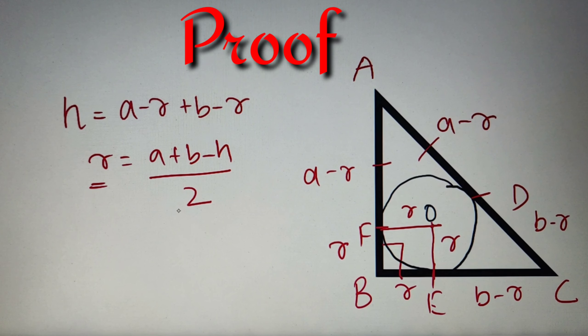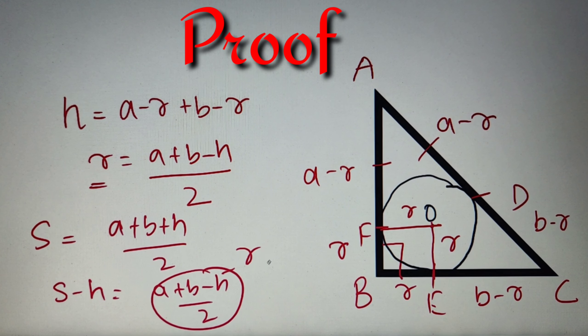So we have found out that the inradius of the triangle is equal to a plus b minus h by 2. Now let's find out what is the semiperimeter for the case of this right angle triangle. So s is equal to a plus b plus c by 2. Now in this case c is equal to h so our semiperimeter is equal to a plus b plus h by 2. Now if I subtract h from both the sides I will get s minus h is equal to a plus b minus h by 2. Now we have just found out that a plus b minus h by 2 is equal to r. So we can say that s minus h is indeed equal to r and we have proved that the inradius of a right angle triangle is equal to semiperimeter minus hypotenuse.